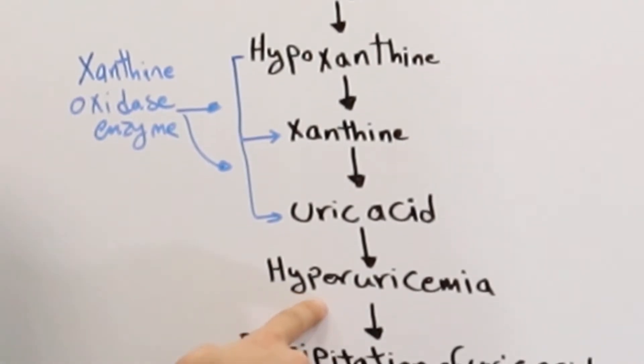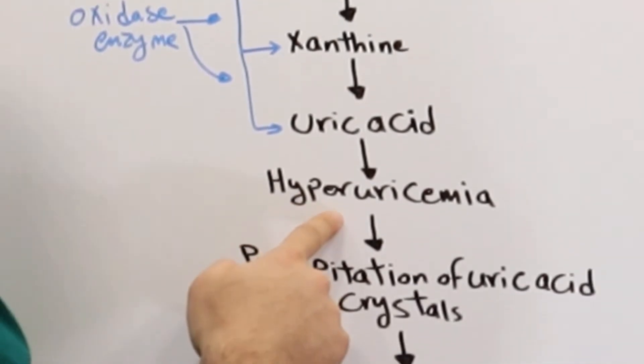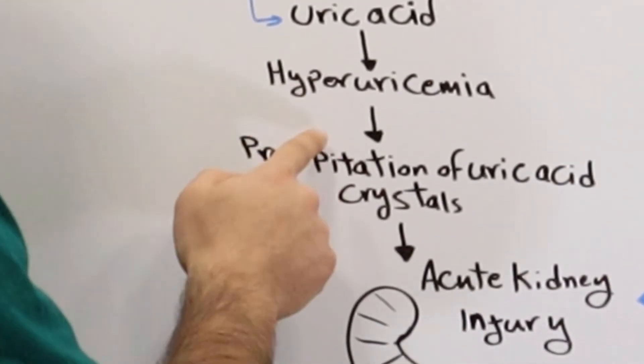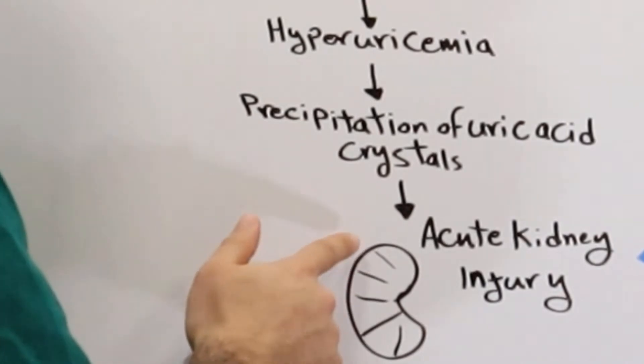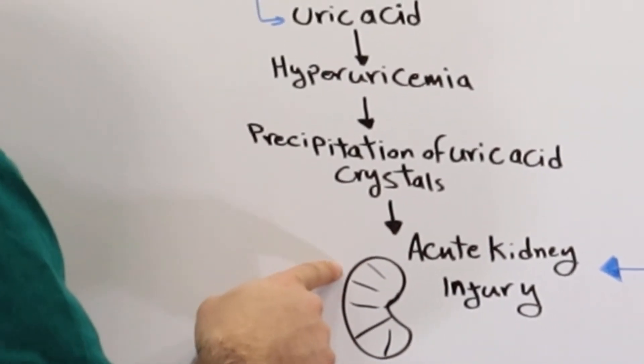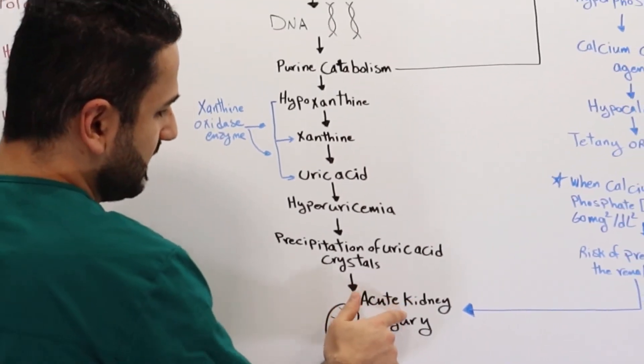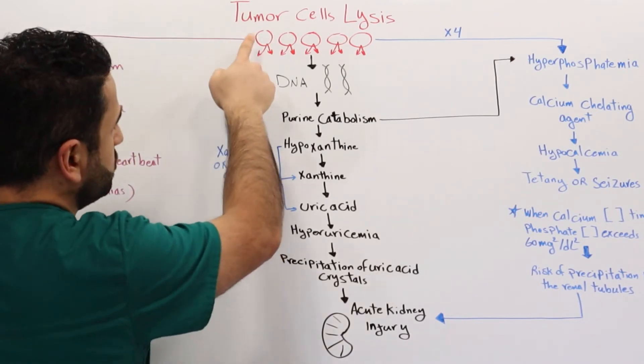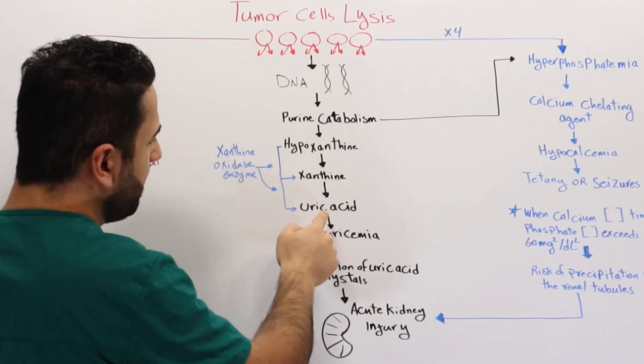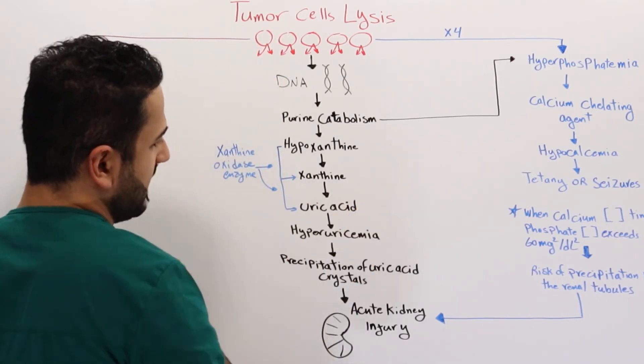Due to the overproduction and overexcretion of uric acid, this leads to precipitation of uric acid crystals in the renal tubules. What ends up happening after this is basically AKI, which is acute kidney injury. So from this step, through tumor lysis syndrome, we end up having high uric acid.